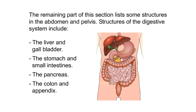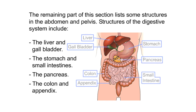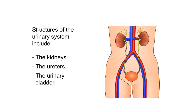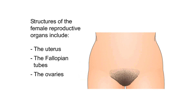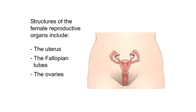Structures of the digestive system include the liver and gallbladder, the stomach and small intestines, the pancreas, the colon, and appendix. Structures of the urinary system include the kidneys, the ureters, and the urinary bladder. Structures of the female reproductive organs include the uterus, the fallopian tubes, and the ovaries.